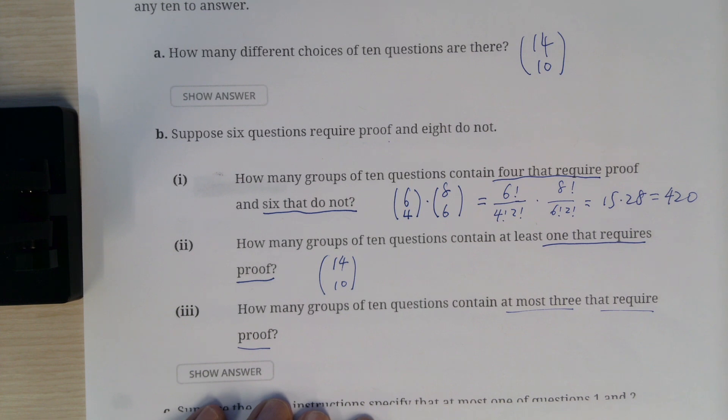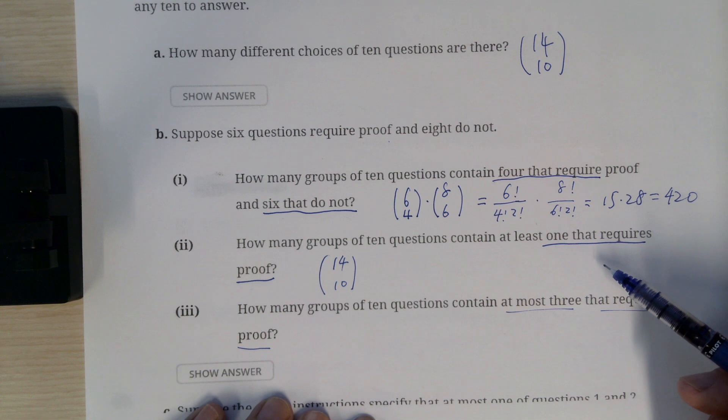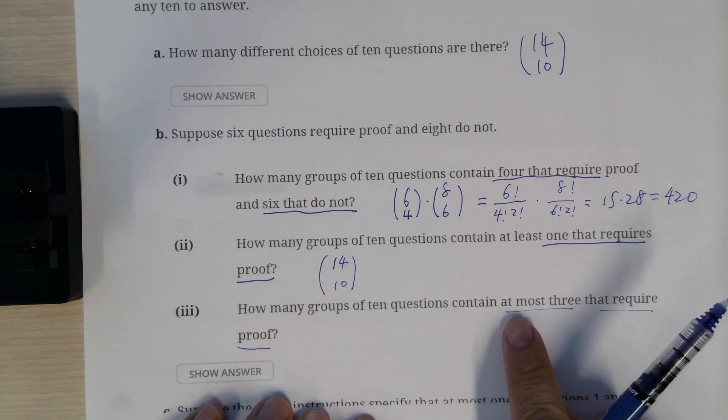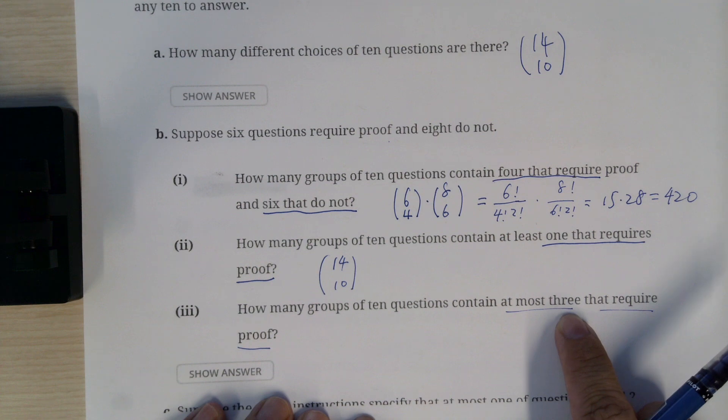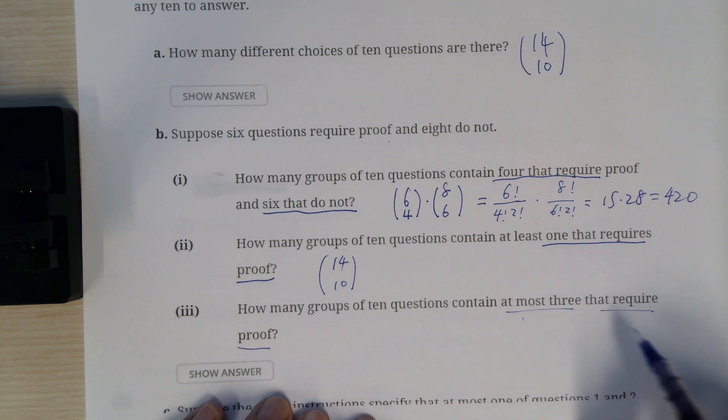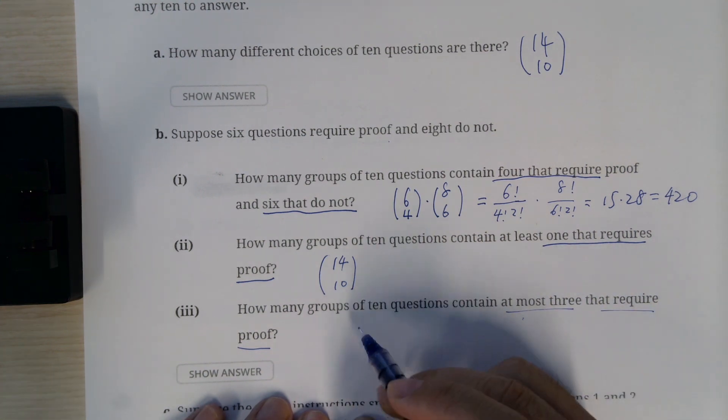Well, when we're talking about at most three, the thing is you need to think about all the cases. Because from part B, notice that no matter how you select you're gonna have at least two. So when we're talking about at most three, it just includes those two cases that have two proofs and three proofs, that's it.